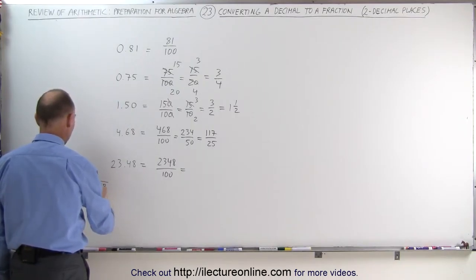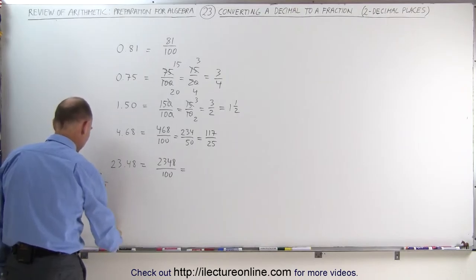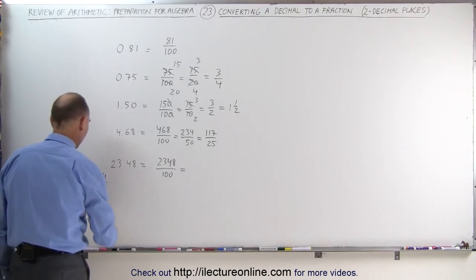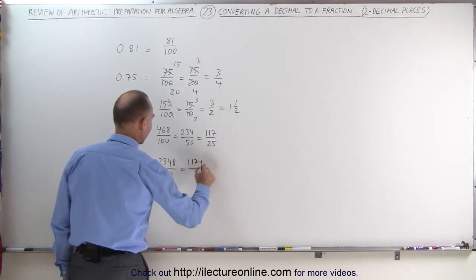2 goes into 2 one time. That's 2. That's 0. Drop the 3. It goes in 1 time. That's 2. That gives me 1. 14. 2 goes into 14 seven times. That goes to 0. And drop down the 8. 2 goes into 8 four times and I get 0. So that becomes 1174 divided by 50.